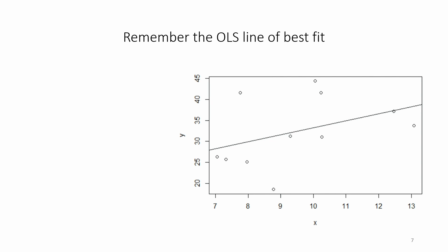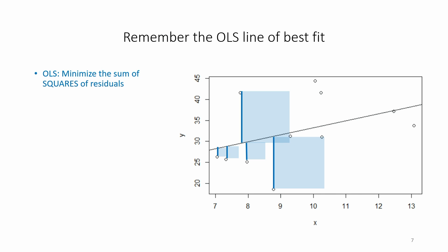Let's take a step back and remember the OLS line of best fit. OLS stands for Ordinary Least Squares, and it finds the line of best fit by minimising the deviations of the data points from the line. It takes the distance between each data point and the line, squares that distance, then sums all squared terms and finds the line that minimises this sum — shown on the graph as the minimised sum of blue shaded areas.